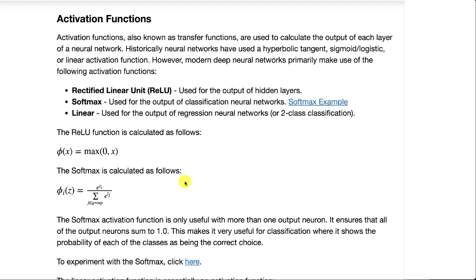This ensures that all of the output neurons sum to 1. You'd like those output neurons to be the probability of each of the classes that the neural network is trying to classify, and softmax just ensures that all those probabilities are truly probabilities and they add up to 1 as probabilities usually do.